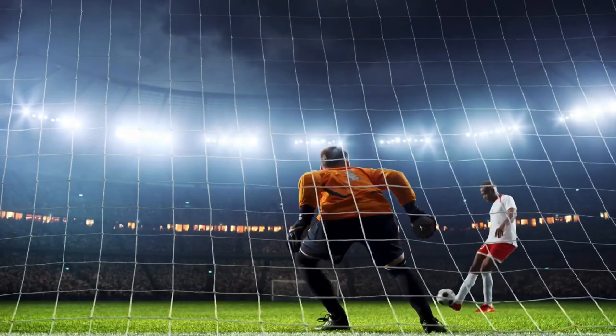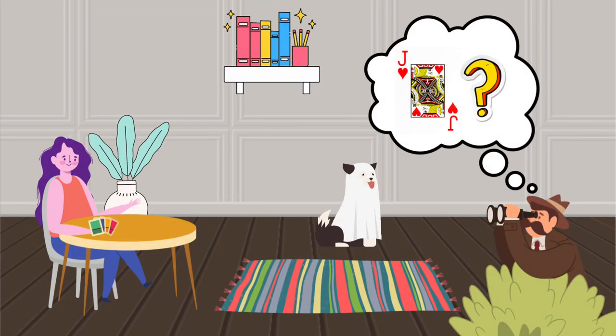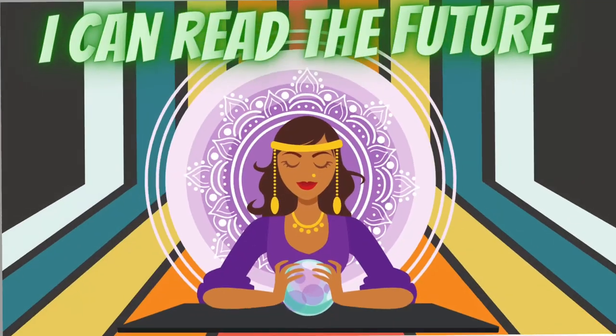The Left Bower can also be used as a blocking card. For example, if you suspect your opponent has the Right Bower, you could play the Left Bower to force them to use it, blocking their future use of that card.